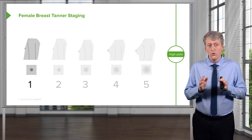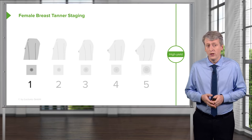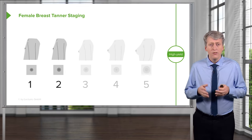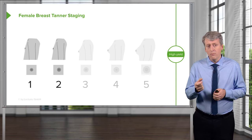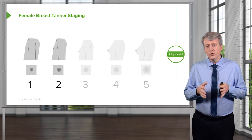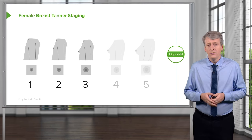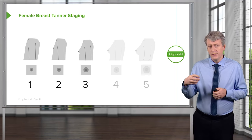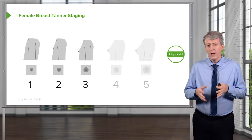Tanner 1 breast is a normal flat contiguous areola with the skin and no breast development at all. This typically stays this way until about age 10. Then a patient develops a slight mound and a widening of the areola, usually between age 10 and around 11 and a half. Then a child develops what we call mound on mound, where the breast bud is sitting on top of the underlying tissue.